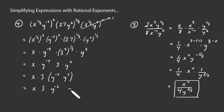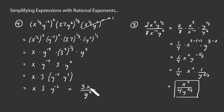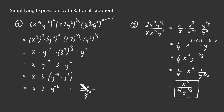We end up with y squared on the bottom, and x and 3 on top. Customarily we write the constant factor first, then the variable — working from left to right, simple factors to more complicated factors. So that's it: 3x over y squared is our answer for that example.